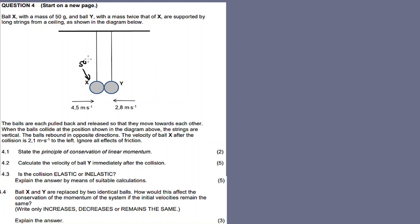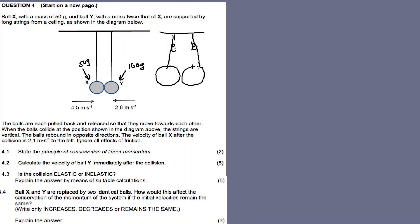Ball X has a mass of 50 grams and ball Y has a mass twice that of X, so ball Y is 100 grams. Both are supported by long strings from a ceiling as shown in the diagram. The balls are each pulled back and released so they move towards each other. When the balls collide at the position shown, the strings are vertical — and this is important because if the string were not vertical it would require a different discussion. After collision the balls rebound in opposite directions.